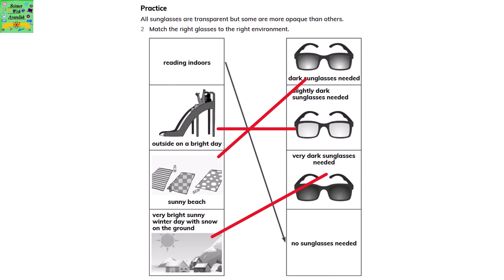All sunglasses are transparent but some are more opaque than others. Match the right glasses to the right environment. Reading indoors — no sunglasses needed. Outside on a bright day — slightly dark sunglasses. A sunny beach — dark sunglasses. A very bright sunny winter day with snow on the ground — very dark sunglasses are needed.